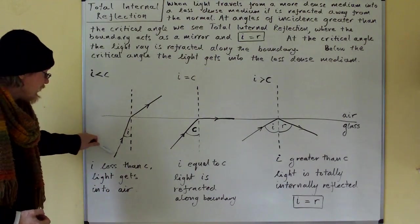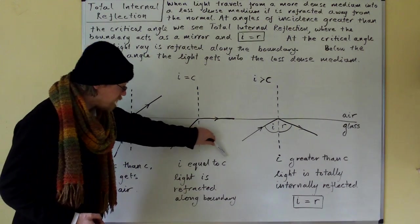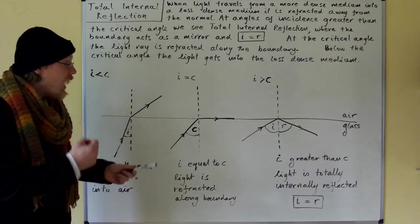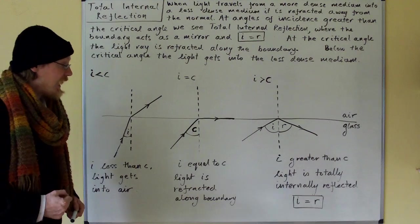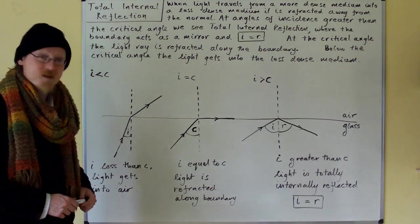So when i is less than the critical angle, light gets into the air. When i is equal to the critical angle, light is refracted along the boundary. And when i is greater than the critical angle, light is totally internally reflected. And i equals r. Thank you.